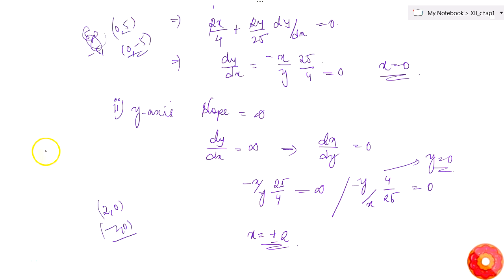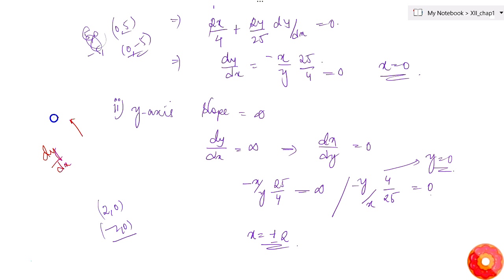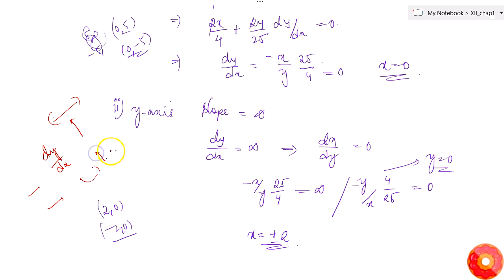Whenever we are asked to find the slope of a tangent, or the point at which they are contacting, or the equation of lines which are tangents to the curve, the first thing we have to do is find dy/dx. If the slope at a certain point is asked, just place the x and y values into the slope expression. If equations of tangent lines are asked, equate dy/dx to the given slope, find the contact points, then use slope and point to get the line.